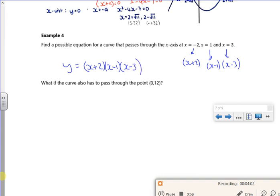Now it might be a multiple of it, so it might be that I sneak a little a in front of it. Most people wouldn't bother, but you can do. So if it goes through the point 0, 12, so when x is 0, I've got y as 12.